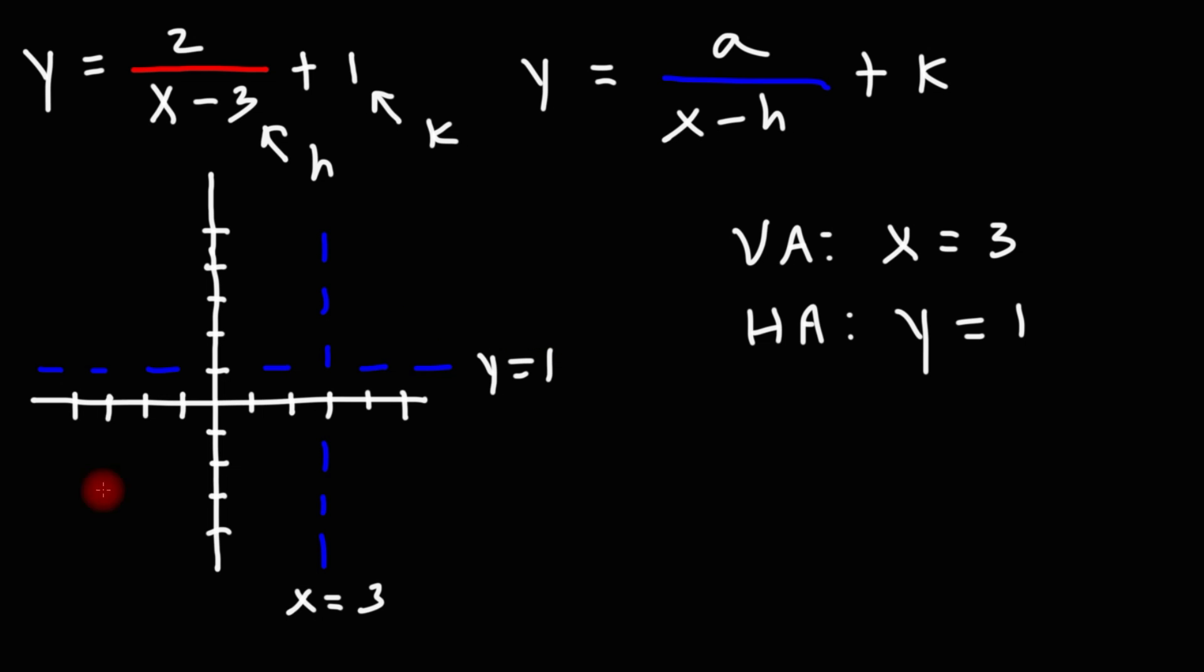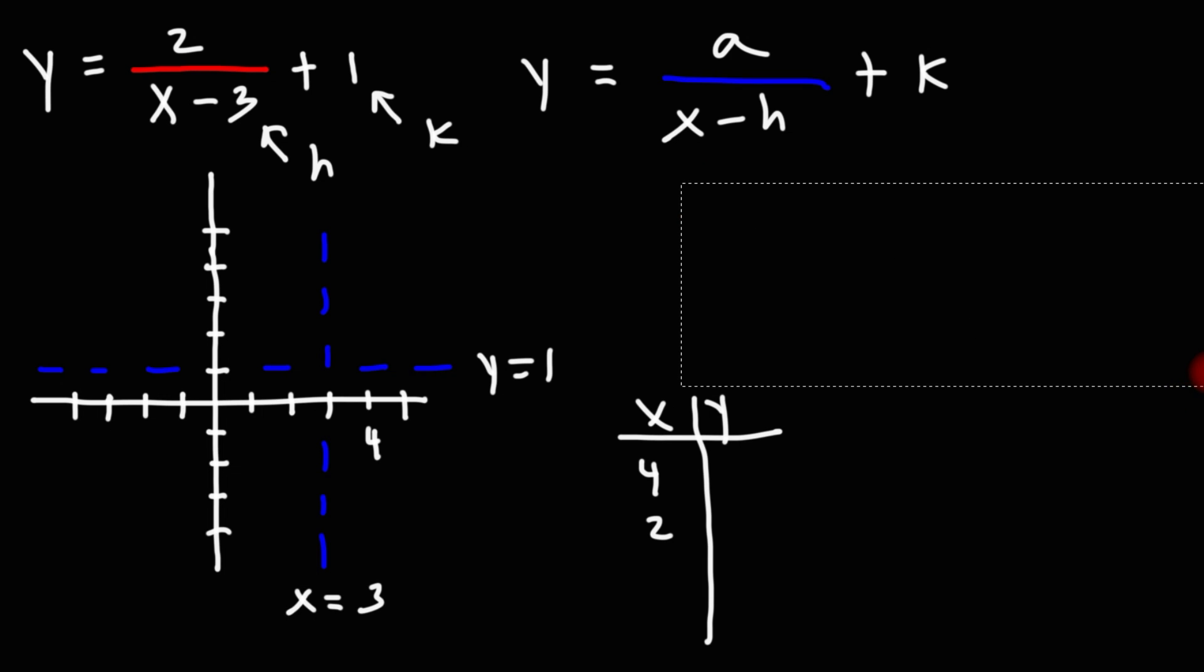But to get a more accurate graph, what we can do is we can plot a few points. So I'm going to pick an x value one unit to the right of the vertical asymptote. So I'm going to go with x equals 4. And also one unit to the left of that, x equals 2. And I also want the y intercept, so I'm going to use 0 as well.